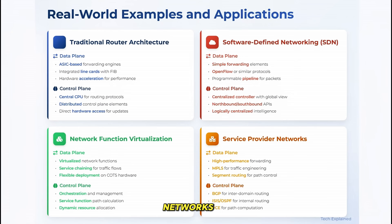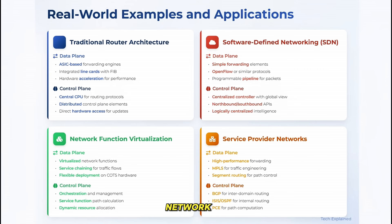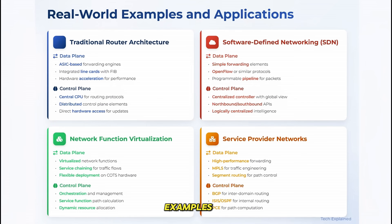In service provider networks, we often see complex interactions between the planes. Providers use protocols like BGP in the control plane to determine how traffic flows between their network and others, while sophisticated data plane implementations ensure that traffic is forwarded efficiently at massive scale. These examples show how the separation between data plane and control plane isn't just theoretical — it's a practical approach that enables different networking architectures to solve different problems.